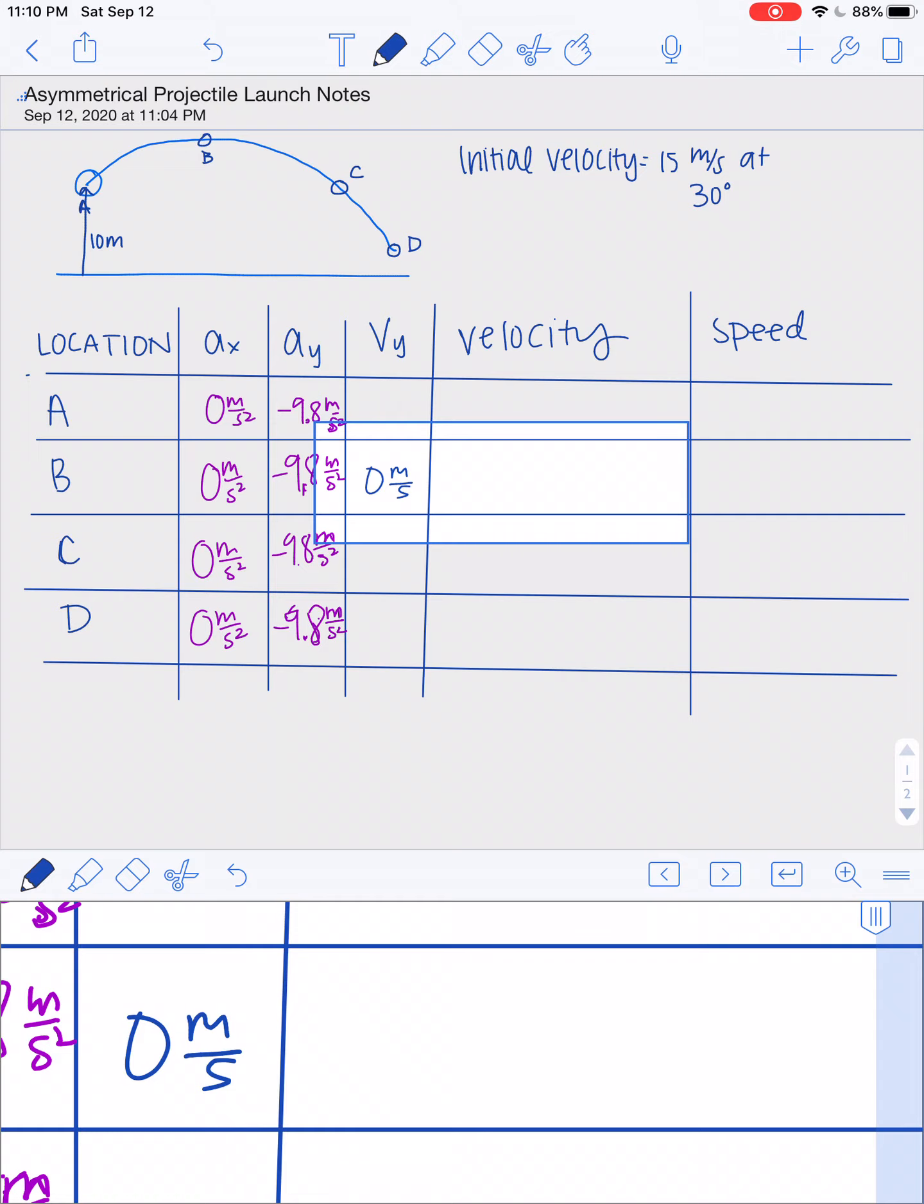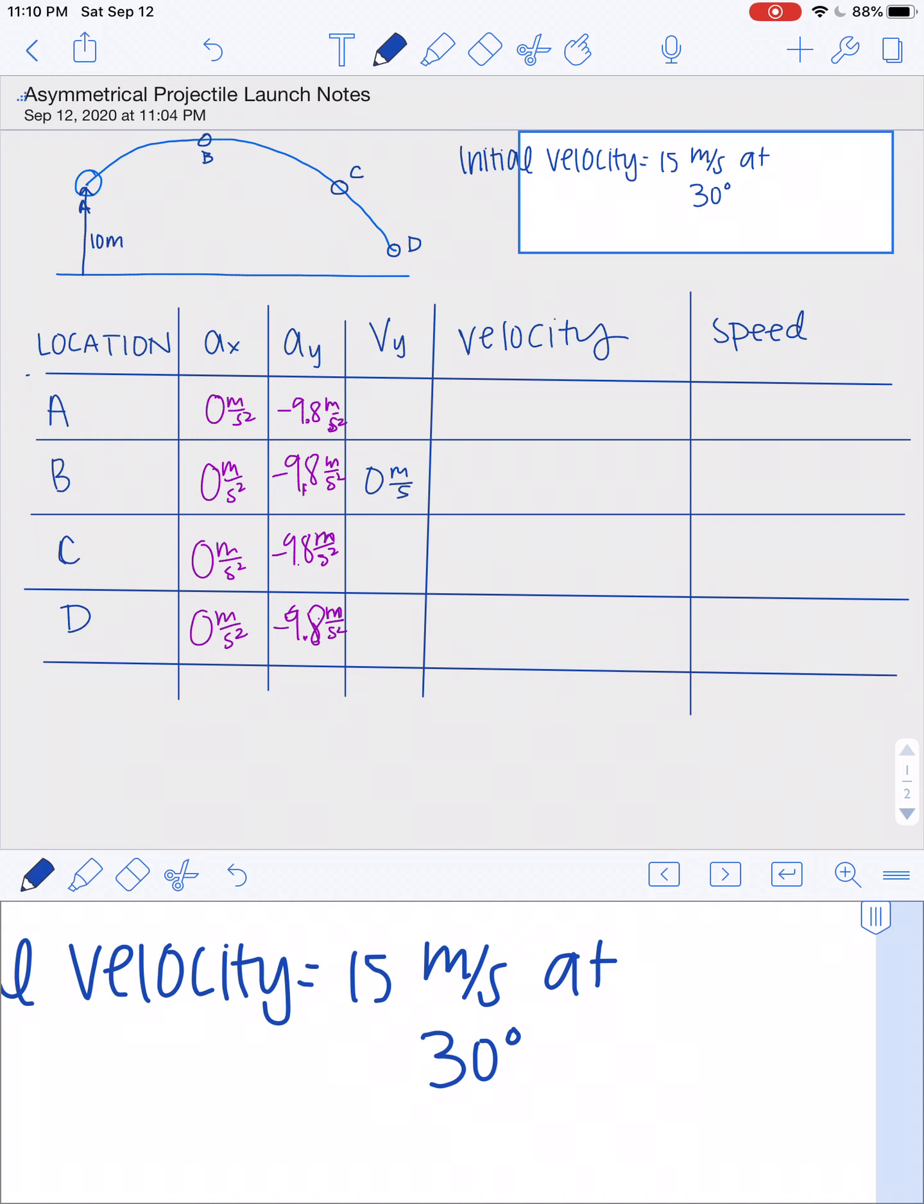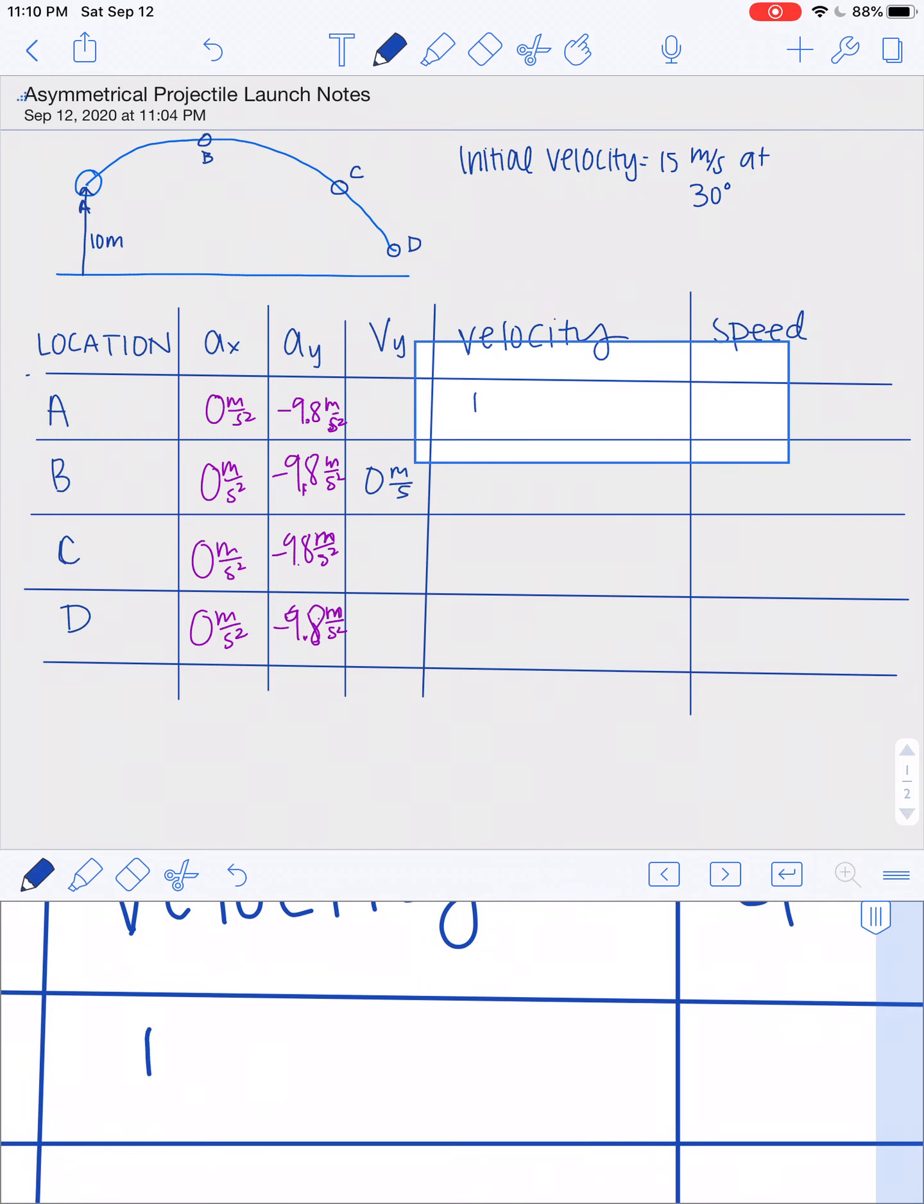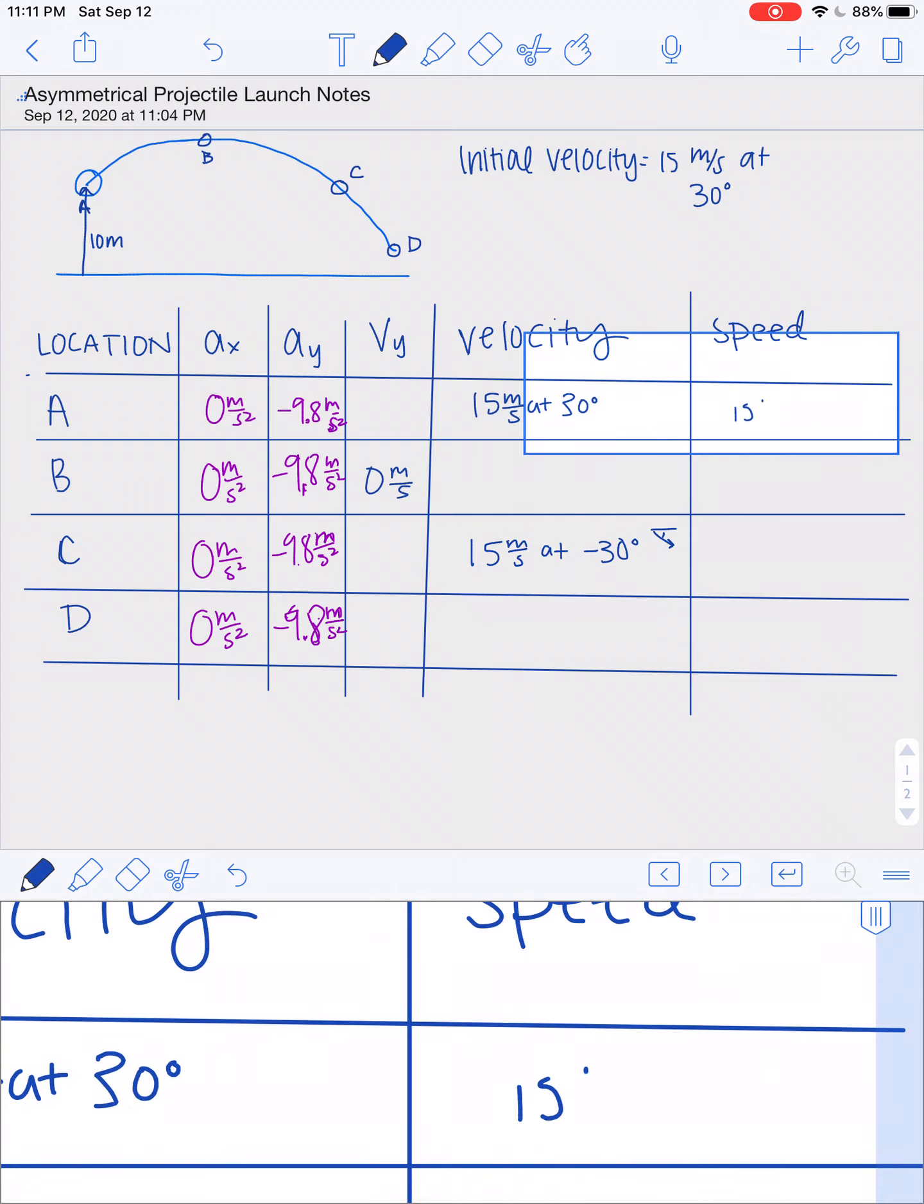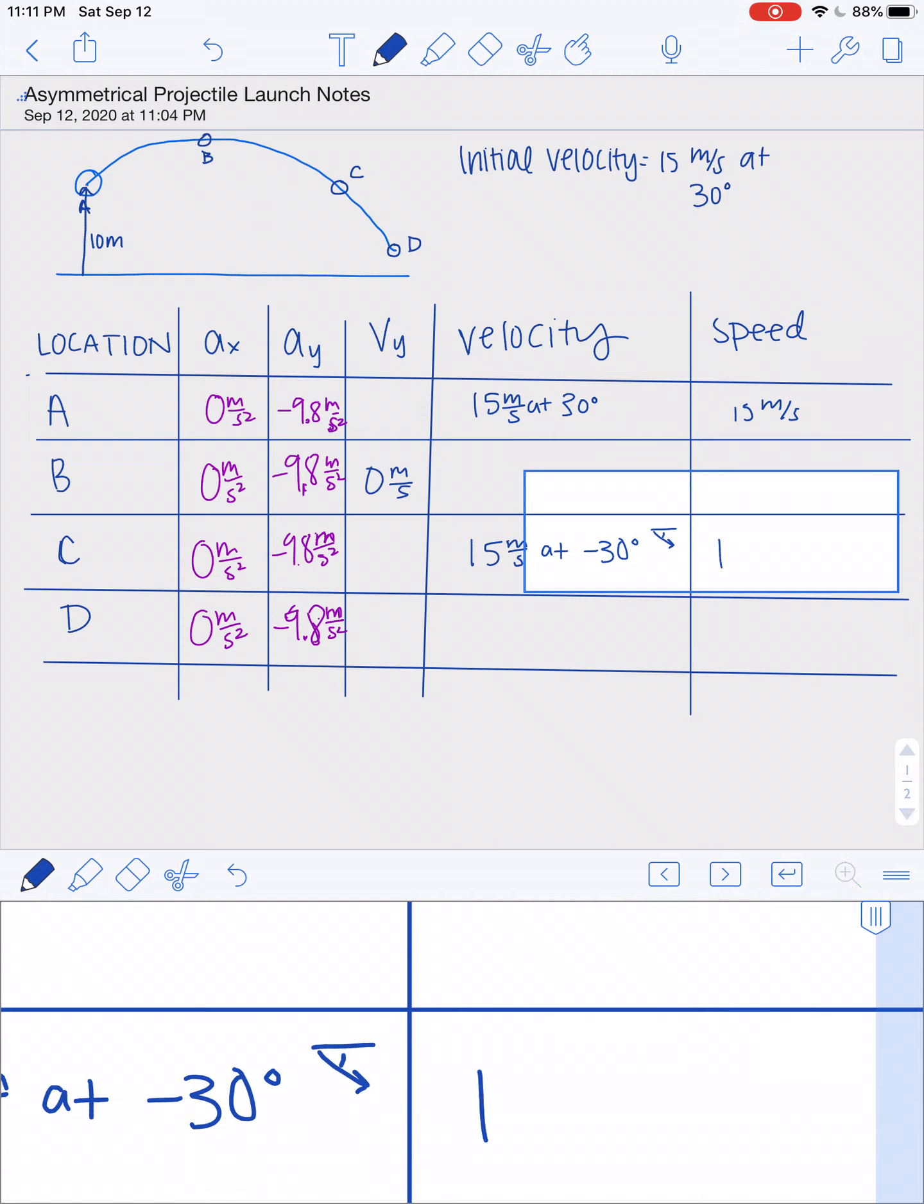We also know the velocity at A. And we also know something else due to symmetry. We know the velocity at C is the same except instead of at positive 30 degrees, it's at negative 30 degrees. So it's below the horizontal. And then we can also fill in some information about the speed at that location because speed is just the velocity without the direction portion.